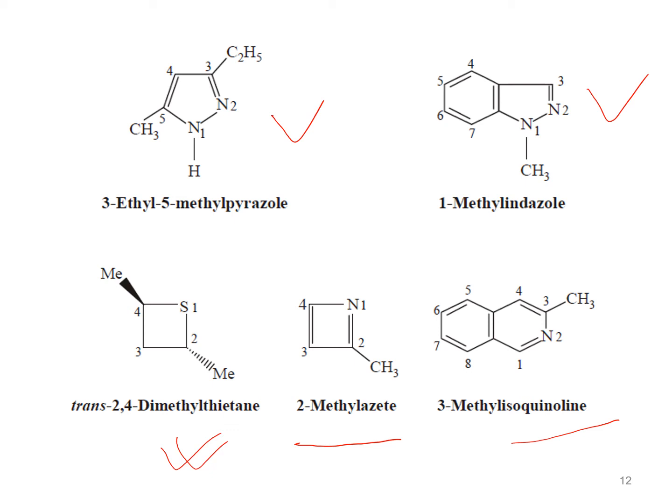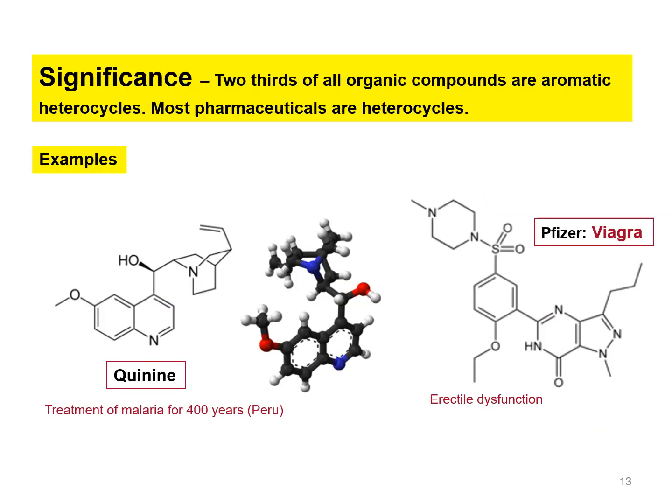Due to the big complicated names, scientists usually give those types of compounds a short common traditional name, and the compound becomes known by that name to everyone. So there is no need to worry about complicated structures.